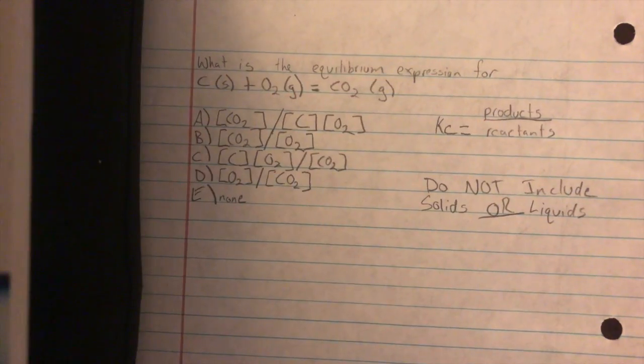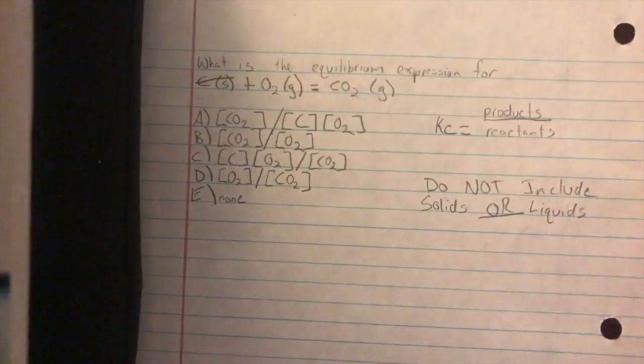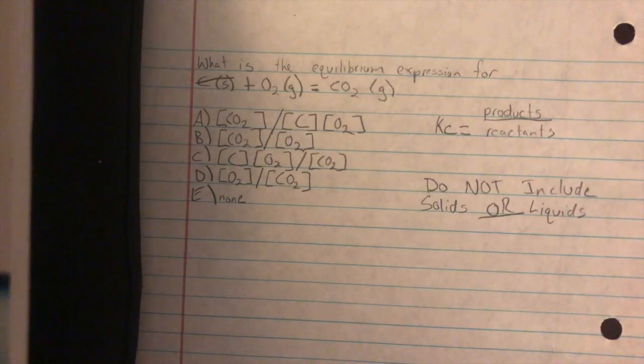So looking at the original problem, we can cross off carbon because carbon is in fact a solid. Now we get oxygen gas yields carbon dioxide gas.